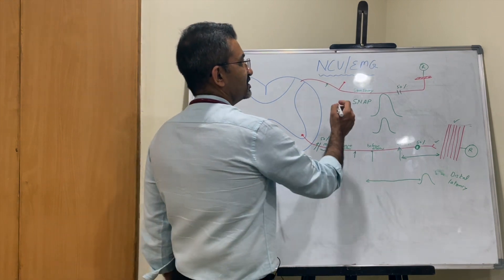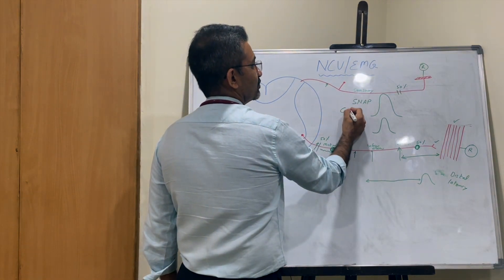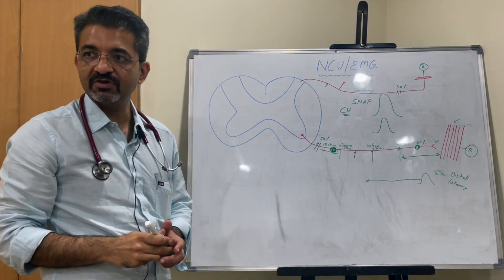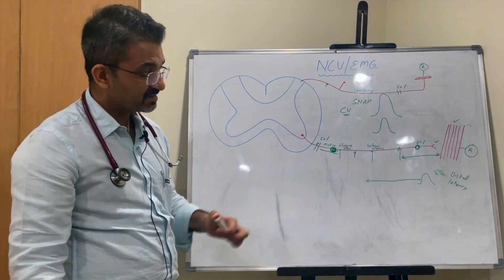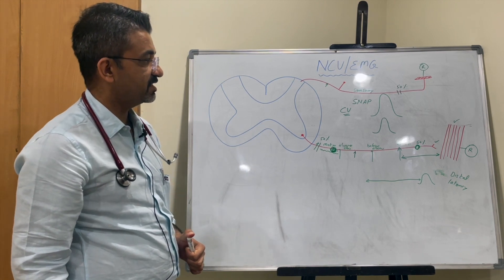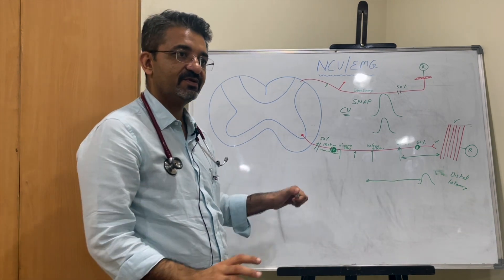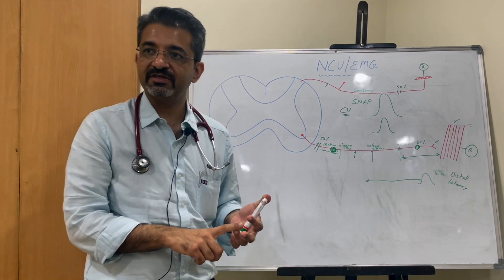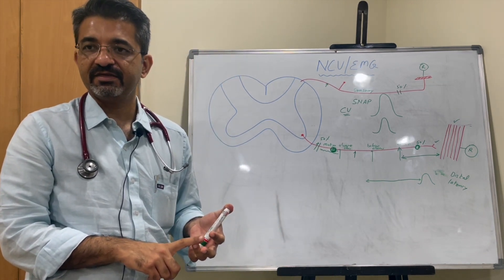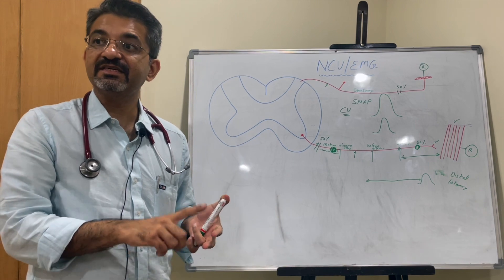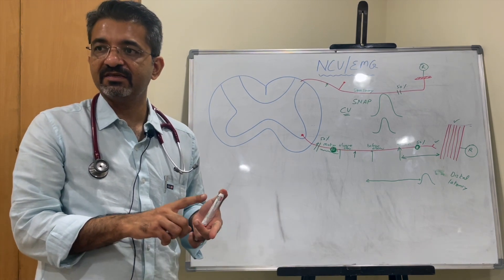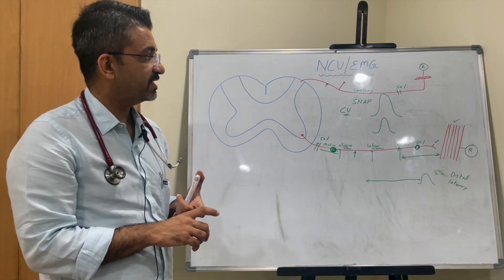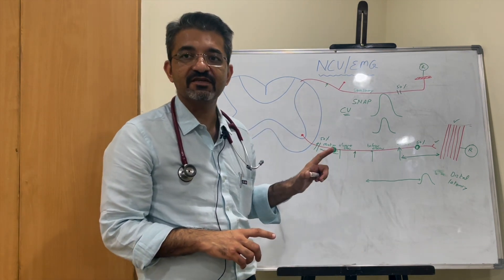You also have conduction velocities in sensory nerves, but we do not measure distal latencies in sensory nerves. To summarize NCS: in motor nerves we measure CMAP amplitude, conduction velocity, and distal latency. Conduction velocity is decreased in demyelinating lesions, whereas amplitude of CMAP decreases in neurogenic conditions. The same applies for sensory nerves.